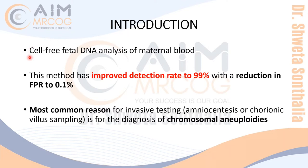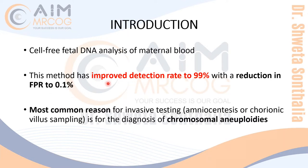This will give you an idea about aneuploidy. This method has improved the detection rate: the combined test detects up to 90%, while cell-free fetal DNA detects up to 99%. It has also reduced the false positive rate — 5% for the combined test versus only 0.1% for cell-free fetal DNA. So it is more sensitive and more specific. Both ways it is beneficial.